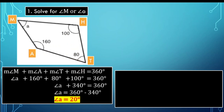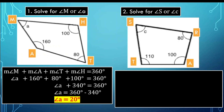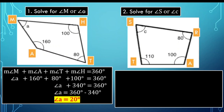Let's proceed to the second problem: solve for the measure of angle S. From this illustration, we have quadrilateral S, T, A, R — or quadrilateral STAR — and what we are looking for is the measure of angle S. Using the same pattern, the measure of angle S plus the measure of angle T plus the measure of angle A plus the measure of angle R is equal to 360 degrees.